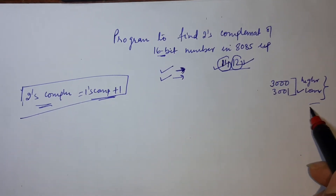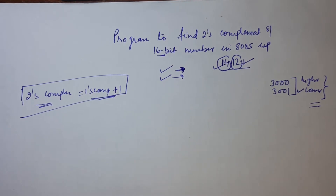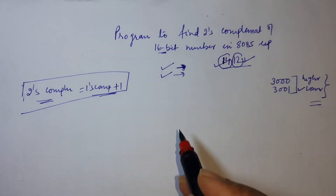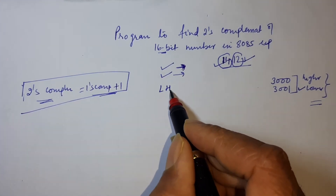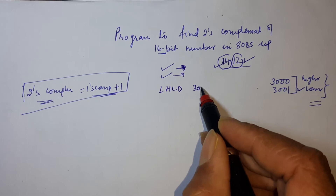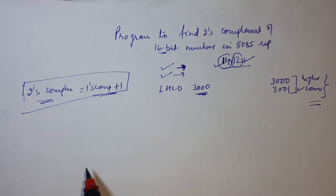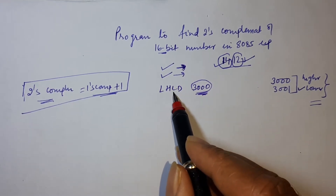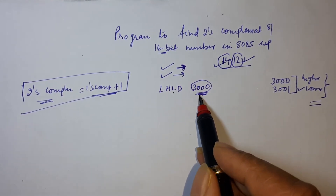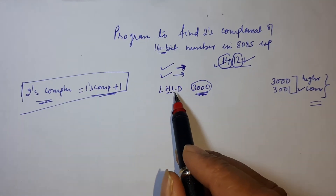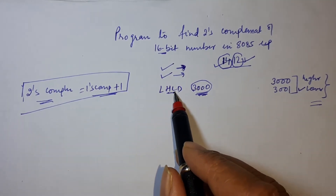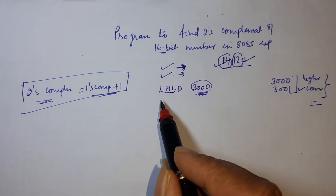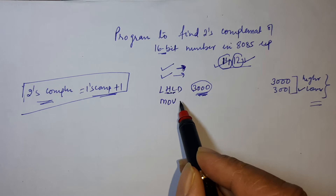We have to find 2's complement of this number. First, LHLD 3000 — this loads the content at memory address 3000H into register L, and the content of the next memory location into register H. So now we have the lower byte in L and the higher byte in H.